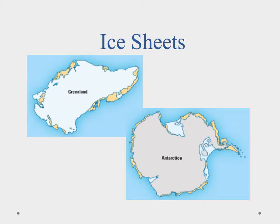In addition to valley glaciers, we also have ice sheets, and ice sheets are going to be a little bit different — they're going to be a lot larger. We have one in Greenland and one that covers all of Antarctica down at the South Pole. What makes ice sheets different is they're going to have more than one area of accumulation where they're growing from, and they form these huge sheets that totally blanket the landscape and can be a lot thicker as well.